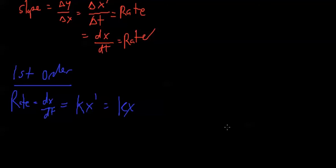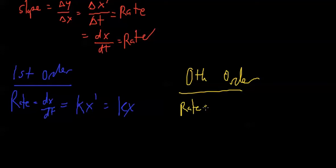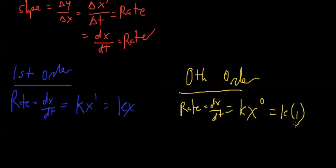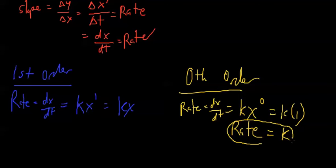Let's move on to zero order and show the difference. Zero order reactions — rate, or dx over dt, is the same basic form. But n is going to be zero, because it's zero order. And x to the zero is 1, so this pretty much equals k. So we have rate equals k for zero order, and rate equals kx for first order.